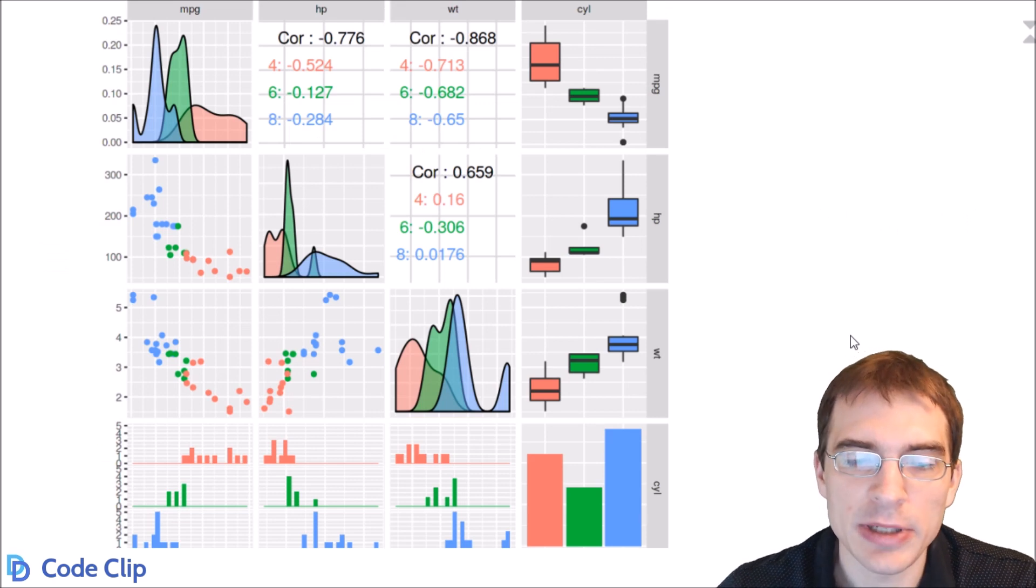You can see we've made a scatterplot matrix again, but it's colored by a categorical variable this time, the cylinder.